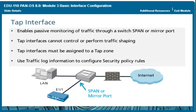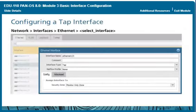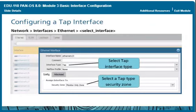Even though a firewall does not block traffic flowing into a Tap interface, it can still thoroughly identify the traffic. You can configure the firewall to perform App-ID, Content-ID, User-ID, and SSL inbound decryption on Tap interfaces. Even though a Tap interface does not relay traffic, you must still assign it to a zone of type Tap, because security policy rules are required to log network traffic and require zones to process it. To enable logging, configure a security policy rule with source and destination zone set to the zone containing the Tap interface.